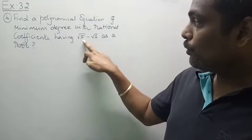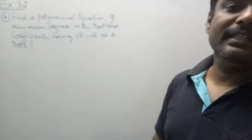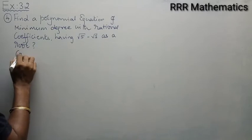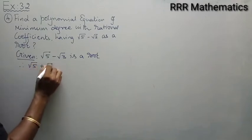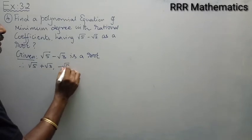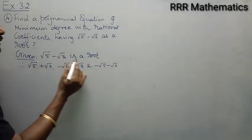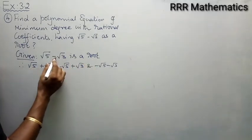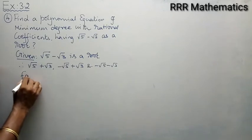They gave √5 minus √3 as a root. Therefore, the other roots are √5 plus √3, minus √5 minus √3, and minus √5 plus √3. For these four roots you want to find the required equation which gives the minimum degree with rational coefficients. Given √5 minus √3 is your root, these are the other three roots.